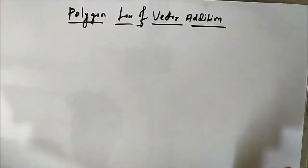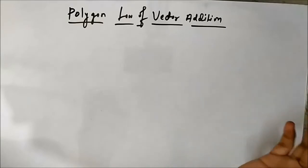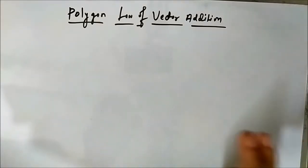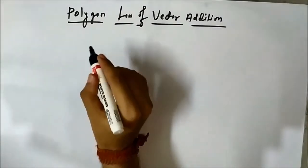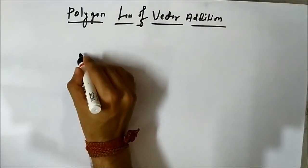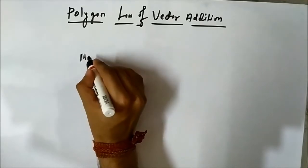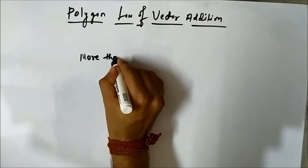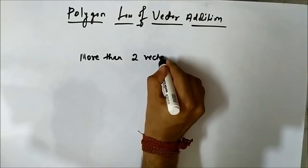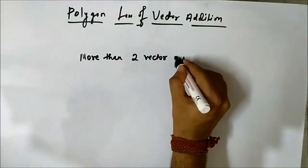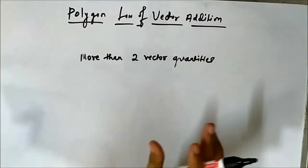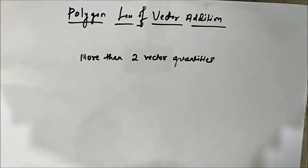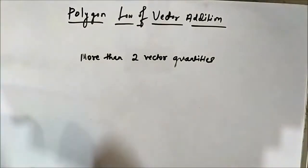The triangle and parallelogram law of vector addition are applicable only for two vector quantities acting at a certain point. The parallelogram is basically a slight modification of the triangle — the same idea. The polygon law of vector addition is important because it is applied when we have more than two vector quantities involved.